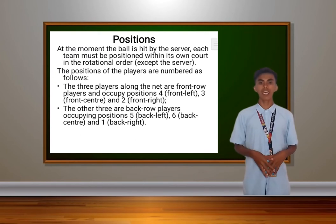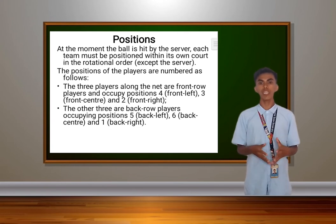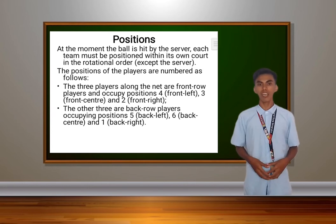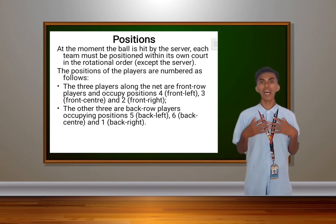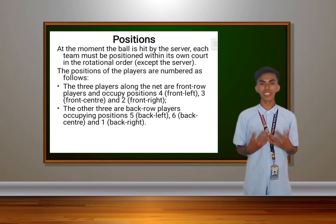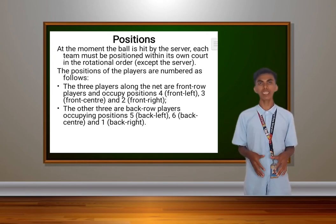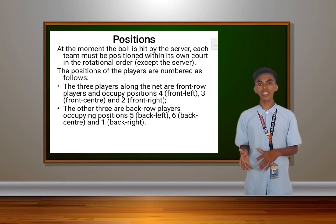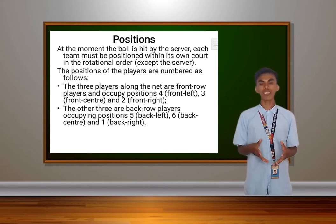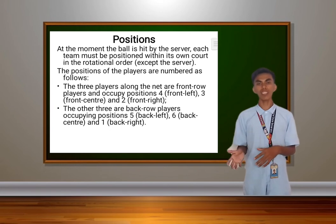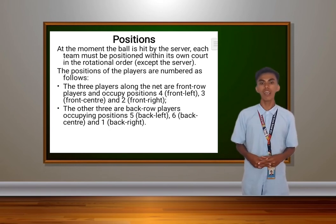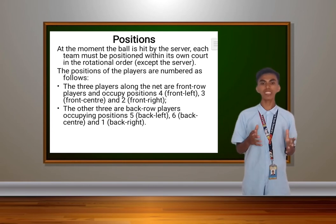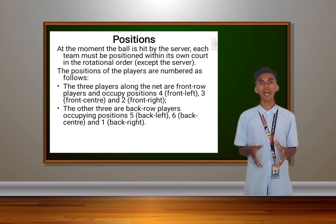Next is positions. At the moment the ball is hit by the server, each team must be positioned within its own court in rotational order, except the server. The three players along the net are front row players occupying position 4 (front left), position 3 (front center), and position 2 (front right). The other three are back row players occupying position 5 (back left), position 6 (back center), and position 1 (back right).